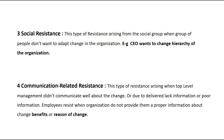This type of resistance arises when top-level managers do not communicate well about the changes — due to a lack of information or poor information. Employees resist when organizations do not provide them with proper information about the changes, their benefits, or the reasons for them. When top-level management does not do proper communication or inform employees in time, employees will resist. With good communication, employees will understand the benefits and recognize why the changes are being introduced.